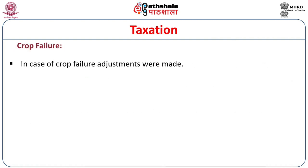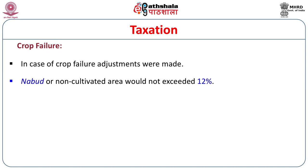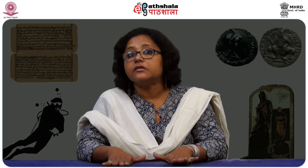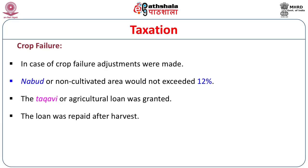What happened if crops failed? In case of crop failure, adjustments could be made. Nabud or non-cultivated area would not exceed 12%. The takavi, or agricultural loan, was granted. The history of takavi goes back to the time of Mohammed bin Tughlaq during the Delhi Sultanate. The loan was repaid after harvest — so takavi was always a pre-harvest loan.